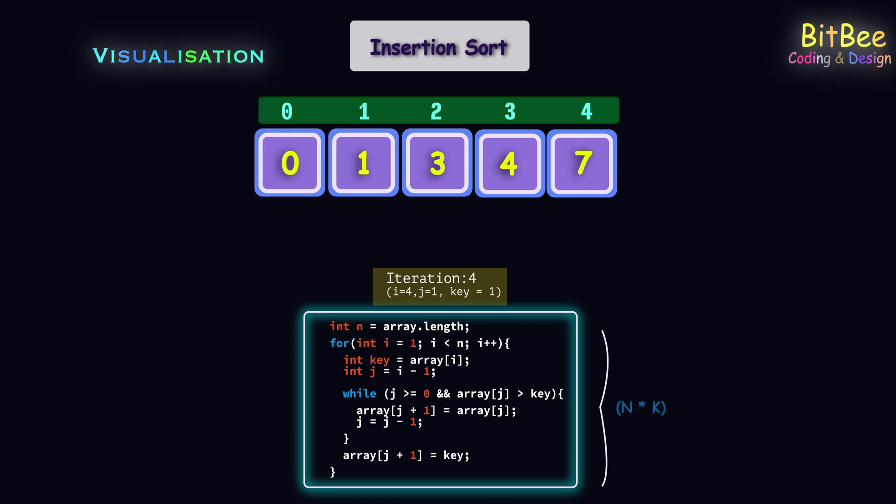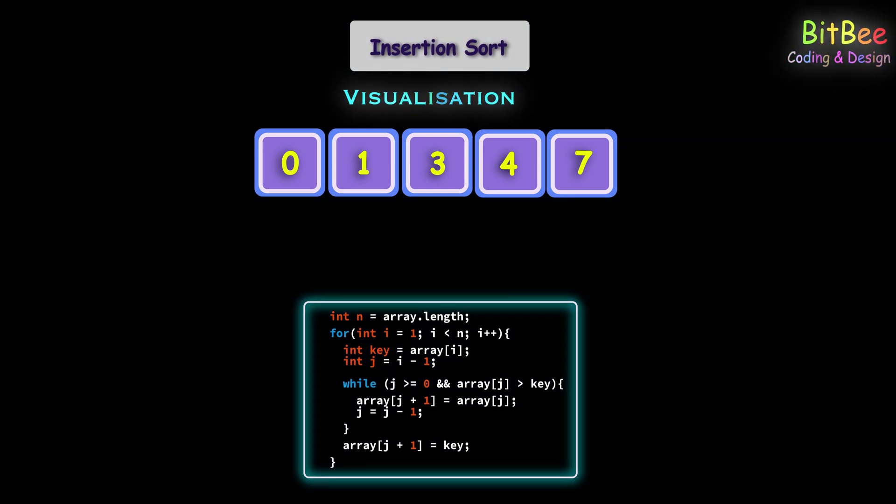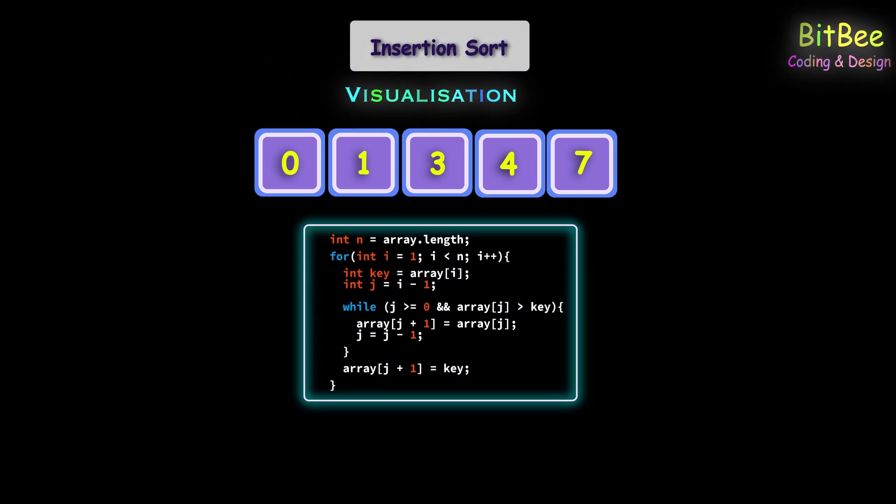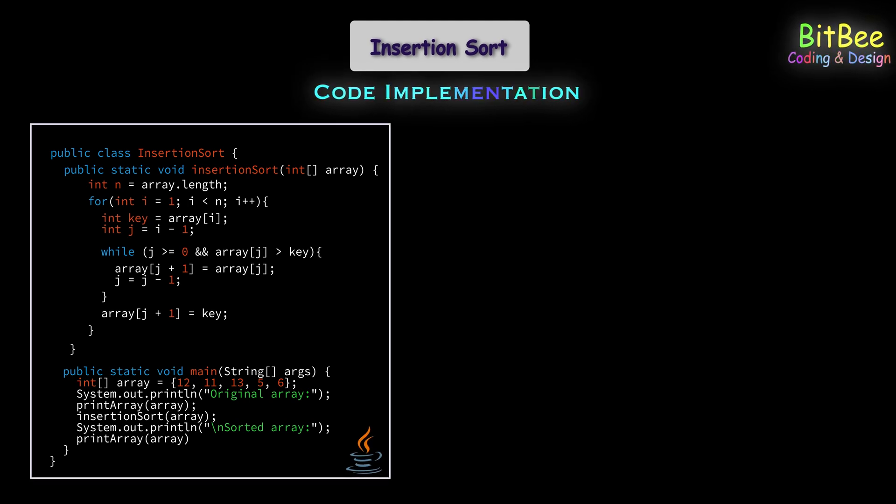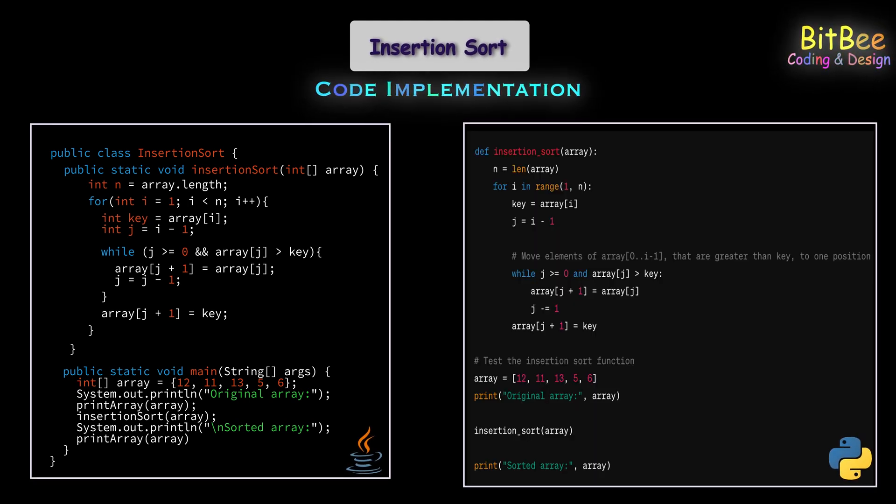I hope now you understood the insertion sort algorithm from this visualization. You can go through the Java and Python code snippets for the insertion sort algorithm. I have also provided the GitHub link in the description for the full code implementation.